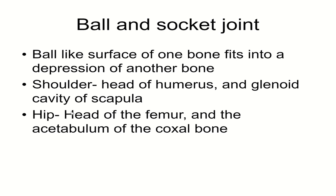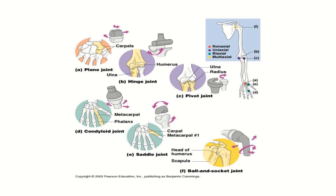Ball and socket joints are what you see in the hip and shoulder — this is where a ball-shaped surface fits into a rounded depression on another bone, allowing for a full range of motion. This diagram is useful because it has mechanical representations showing the range of motion of these joints without the complexity of bone structure getting in the way, and it also shows examples of where each joint type is found.